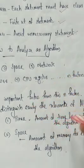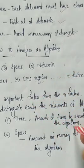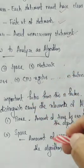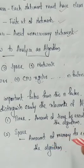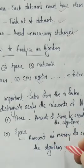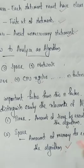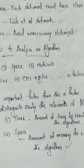The amount of time required for executing an algorithm is called time complexity. The amount of memory required for executing the algorithm is called space complexity. Thank you for watching.